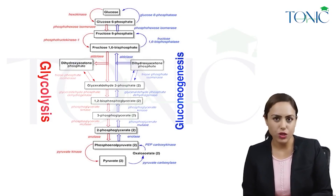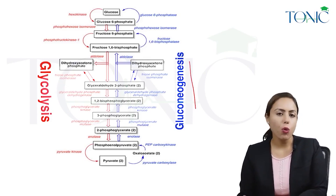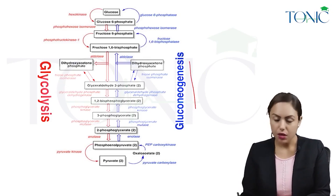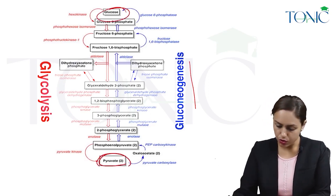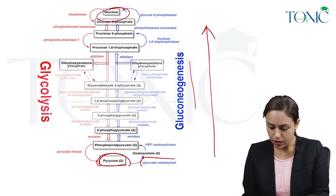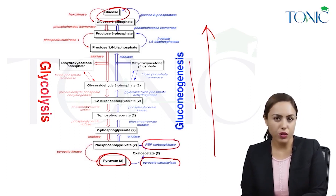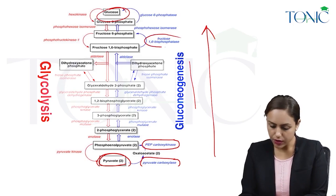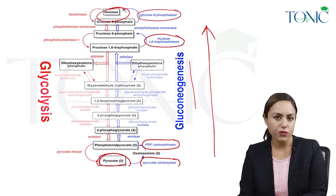Let us do energetics of gluconeogenesis. Gluconeogenesis is the opposite kind of pathway to glycolysis, but 4 enzymes are different. From pyruvate to glucose in this direction, we have 4 enzymes which are different than glycolysis: pyruvate carboxylase is the first one, then PEPCK (phosphoenol pyruvate carboxykinase), then fructose 1,6-bisphosphatase, and then glucose 6-phosphatase.